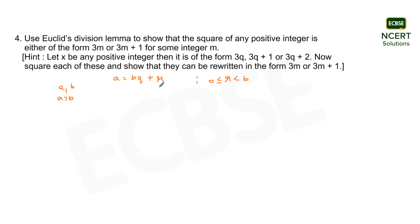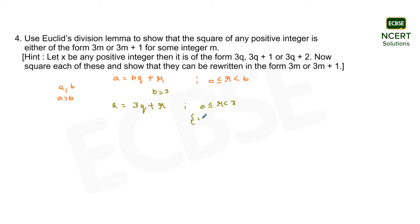Now suppose in this case b is equal to 3. Then a will be equal to 3q plus r. Since b equals 3, the range of values which r can take is greater than or equal to 0 but less than 3. So the set of values which r can take is {0, 1, 2}. Now substituting each value of r one by one.